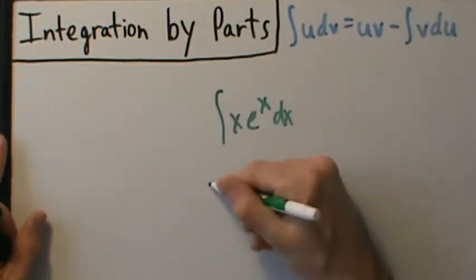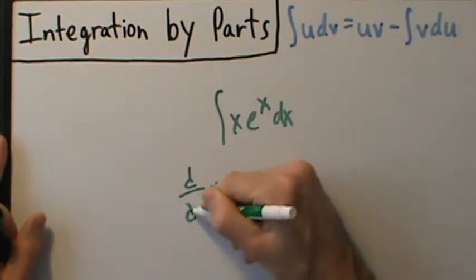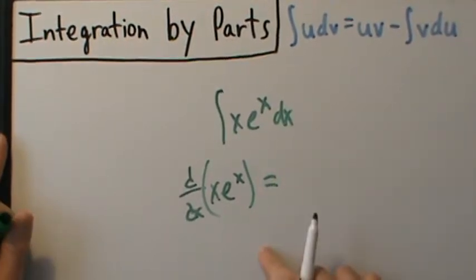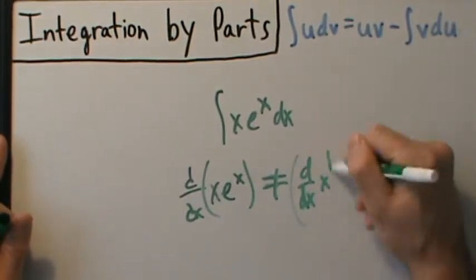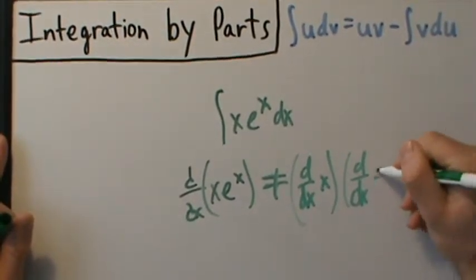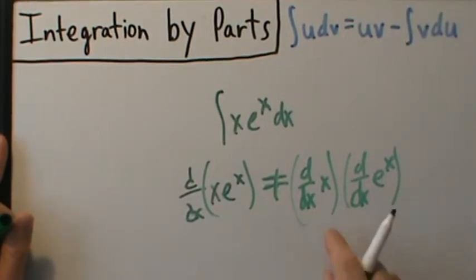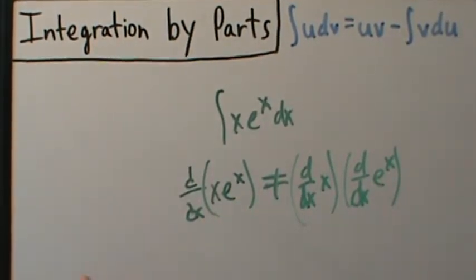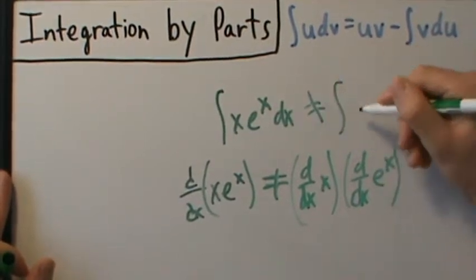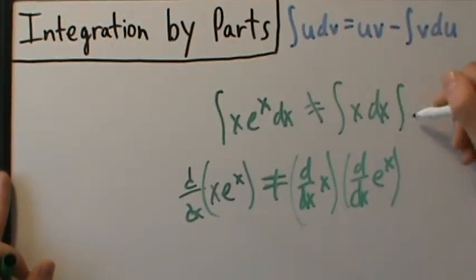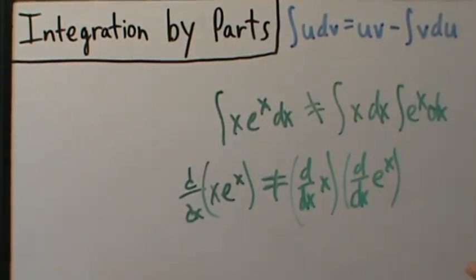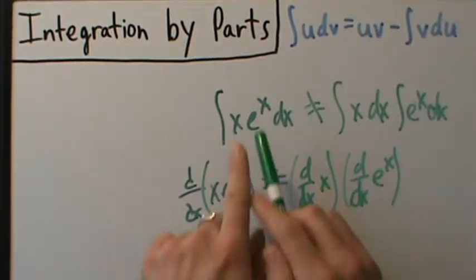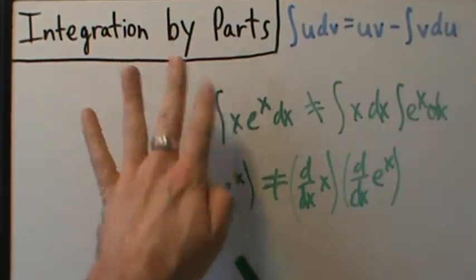Just like if you wanted to take a derivative of x times e to the x, there's the product rule. This is not the same thing as derivative of the first times derivative of the second — remember there's that special product rule you have to use. Likewise, if you want to integrate a product, it's not going to be the same thing as the integral of the first times the integral of the second. So don't split it up like that. If you want to differentiate a product, use the product rule. If you want to integrate a product, then integration by parts is probably going to be the way to go.